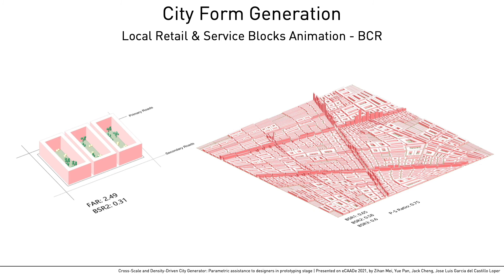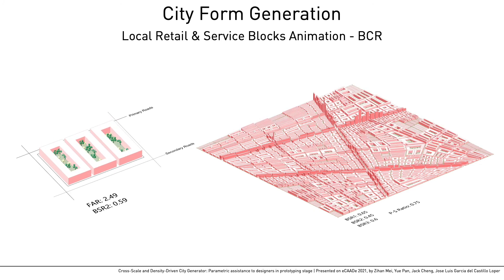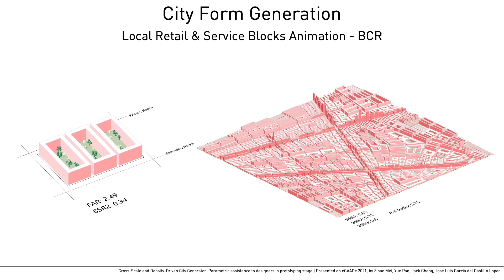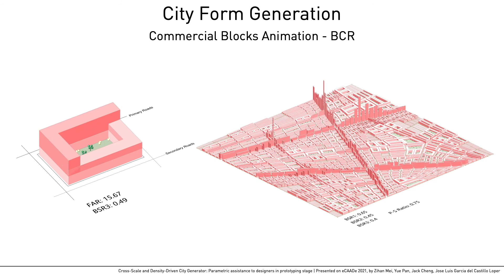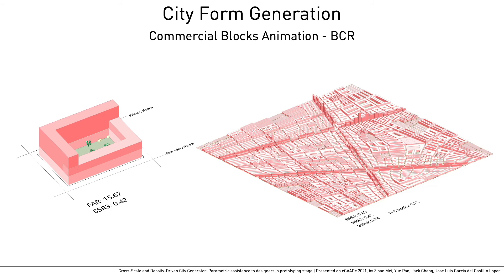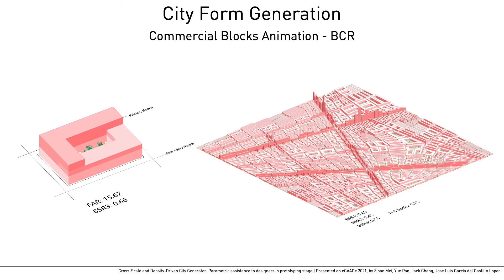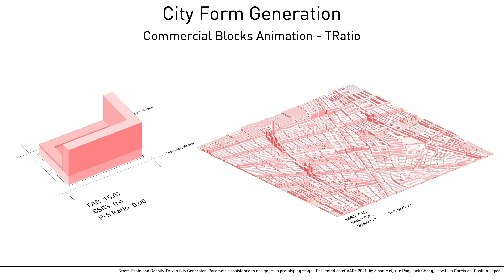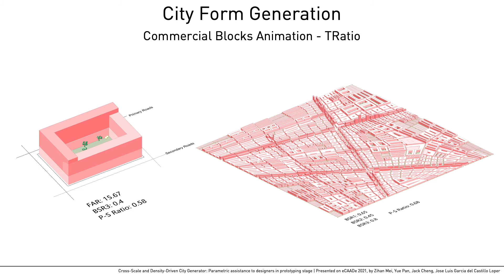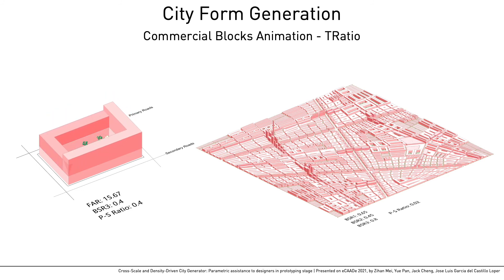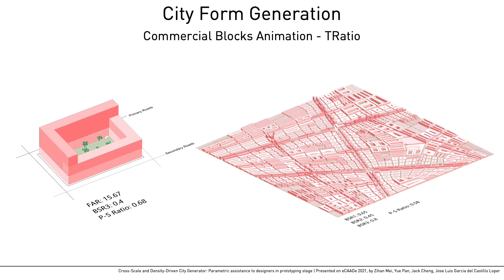Local retail and service blocks are visualized as a group of or single peripheral block. The area of the inner courtyard, the peripheral building depth, and height are correlatively controlled by the defined FAR and the user input BCR. Commercial blocks are visualized as a single peripheral building with tower extrusion facing the main road and secondary roads. The building form is divided into the bottom peripheral part with set building depth and height, and the top tower extrusion with height determined by the FAR and user input BCR and T ratio. BCR controls the tower height, and T ratio controls the ratio between towers facing different streets.